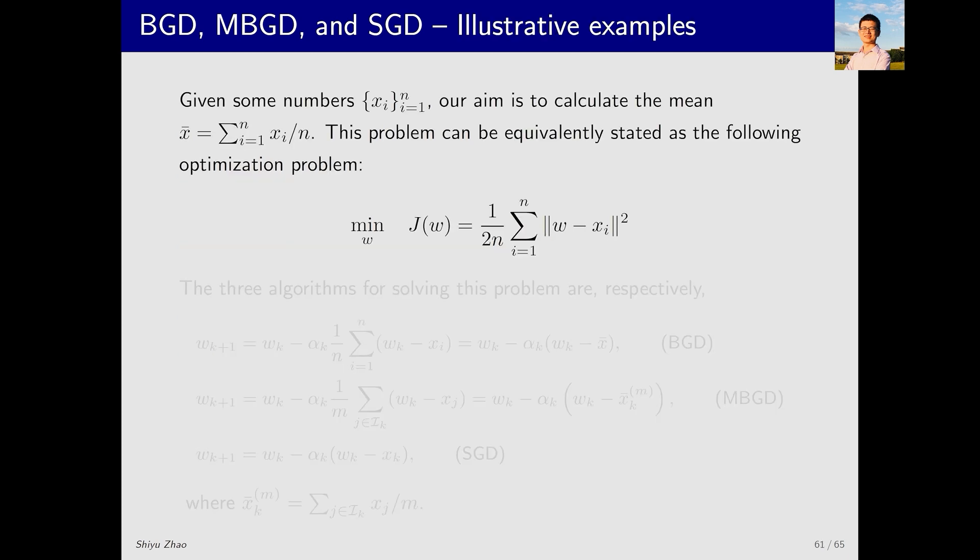Now, let's use an example to illustrate the three algorithms. The example is the mean estimation problem we considered many times. I have N samples, and I want to calculate the mean X-bar of these N samples. This problem can be equivalently formulated as an optimization problem, where we seek the minimum of this objective function.